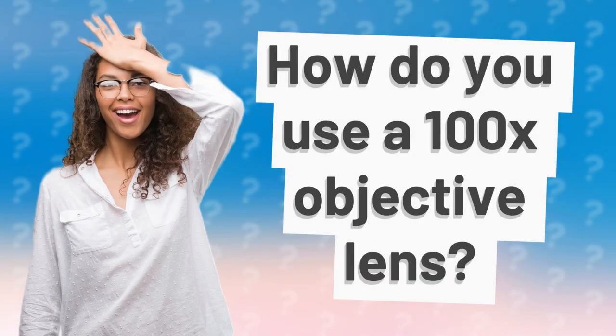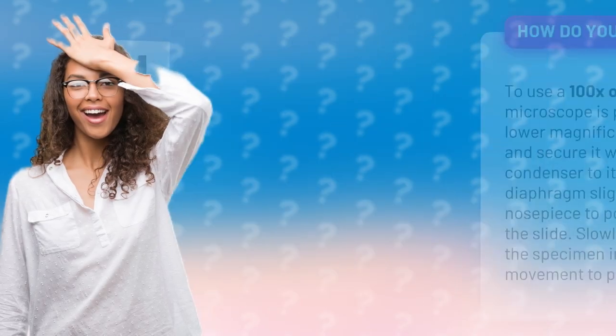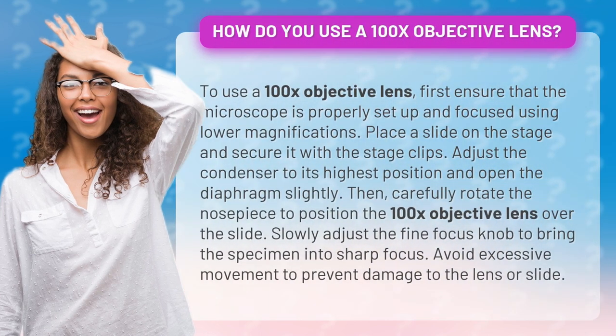How do you use a 100x objective lens? To use a 100x objective lens, first ensure that the microscope is properly set up and focused using lower magnifications.